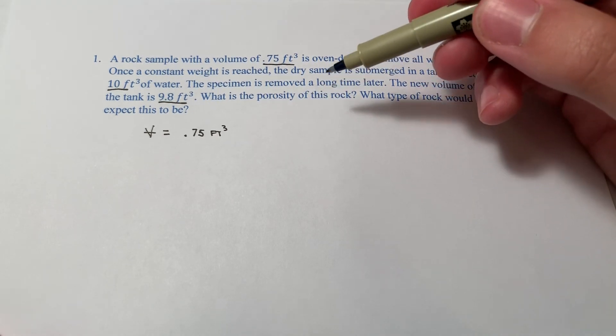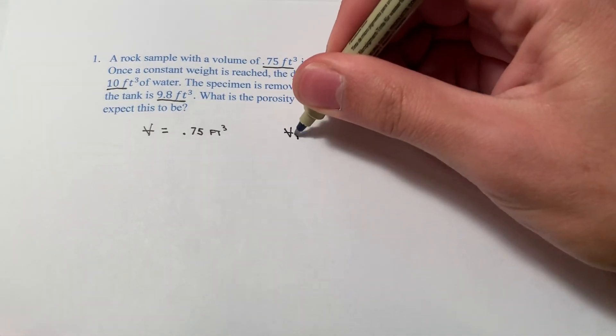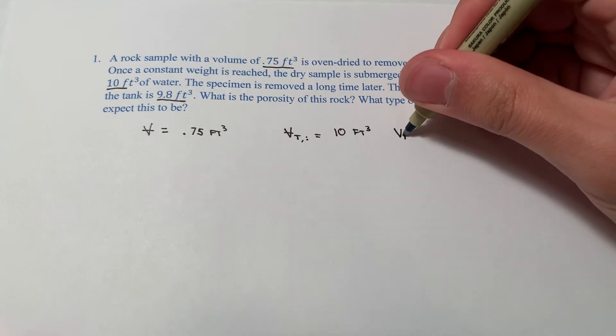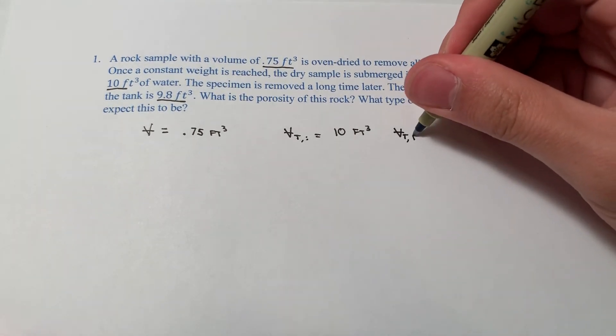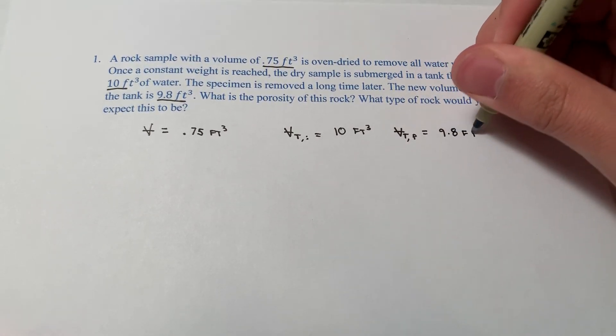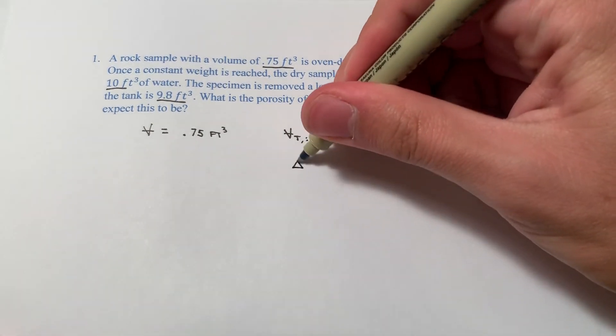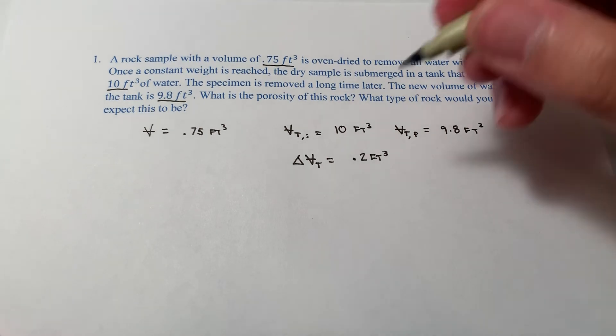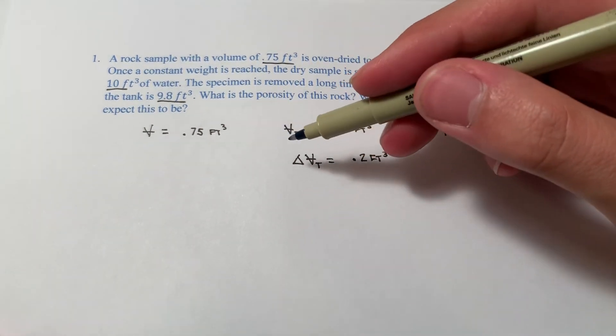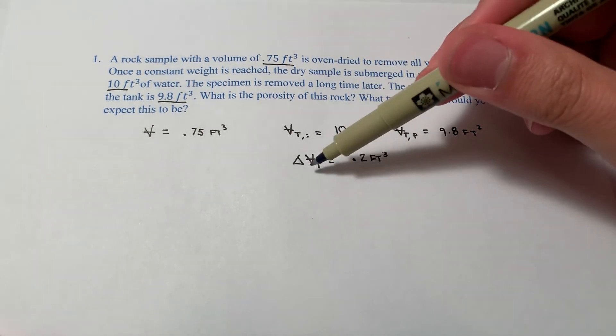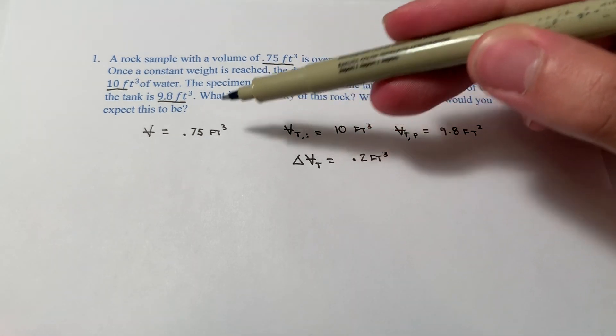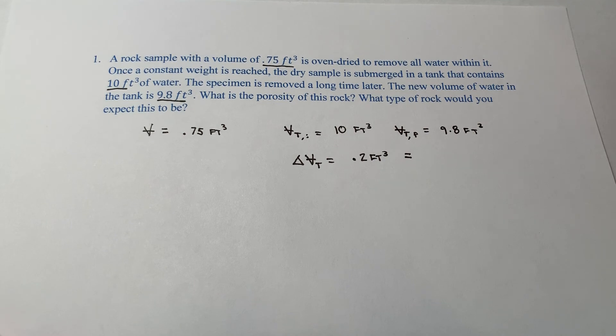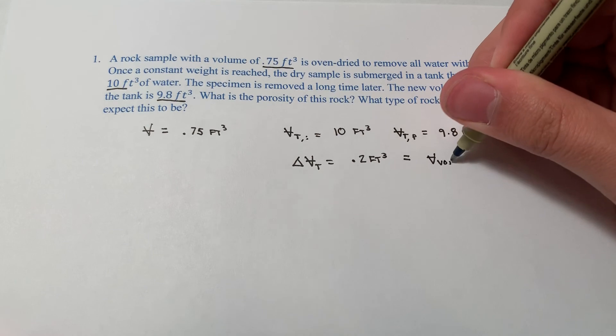And by the time it does, there's been a change. So we'll say the volume of the tank, V sub T, initial, we said was 10 cubic feet. And then using this, just a little bit of subtraction, we'll say that the change in volume of the tank is equal to 0.2 feet cubed. And I guess technically that's negative because it lost. But the thing we're looking for here is, okay, let's think about this conceptually. The water that left the tank had to have entered the rock. So this means that, effectively, this is equal to, because it has achieved steady state, this is equal to the volume of our void space in the rock.